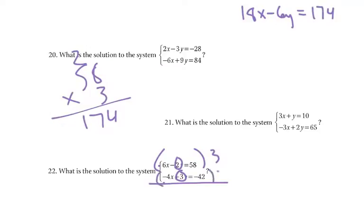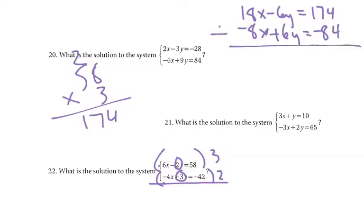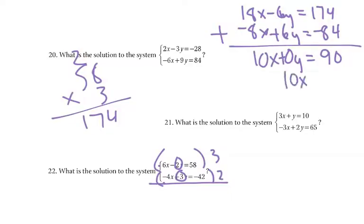The bottom one I would then times by 2, so I'd get negative 4 times 2 is negative 8x, plus 6y equals negative 42 times 2, which is negative 84. Then we would add them together because this gives me 0y. 174 plus negative 84 would be 90, and 18x plus negative 8x would be positive 10x. So we get 10x equals 90, divide by 10, and x would equal 9.